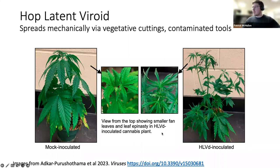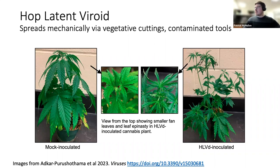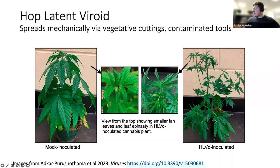For the posting for this talk, we made the disclaimer that we aren't going to be focusing on hop latent viroid, which is becoming an increasingly prevalent issue across the country. However, we haven't yet seen this in New York State. A healthy plant not infected with hop latent viroid is shown on the left, while on the right is one infected with it, showing smaller fan leaves and leaf epinasty.